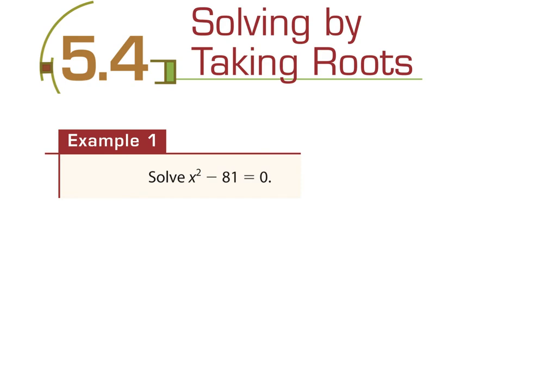This second method for solving is what you're typically going to do if you do not have a b — a center section. In standard form it looks like ax squared plus bx plus c. So if your b is zero, you're just going to have an x squared and a constant. When you have that, it's usually easiest to solve by taking the square root. You don't have to worry about factoring — you can just solve by taking the square root.